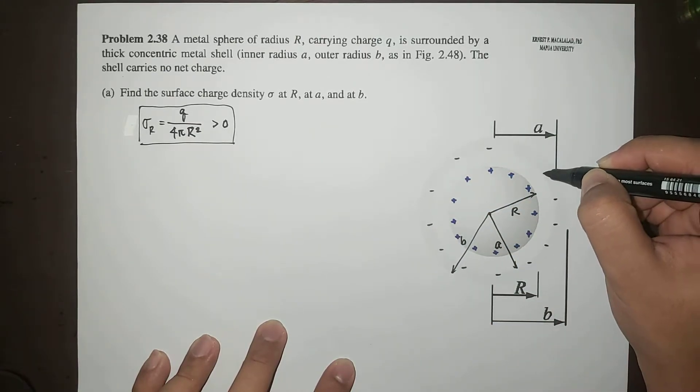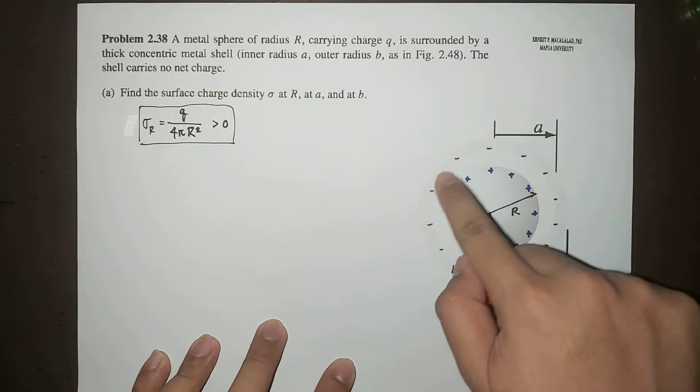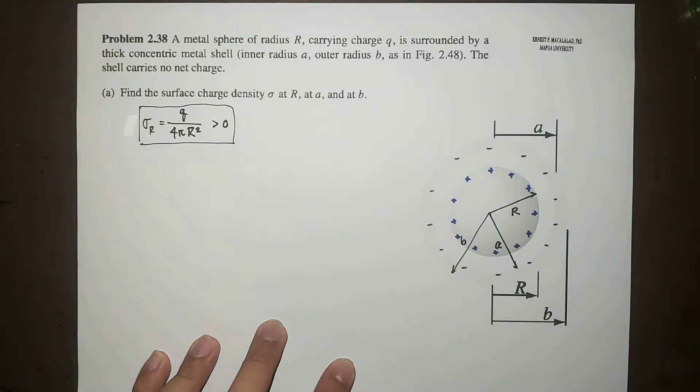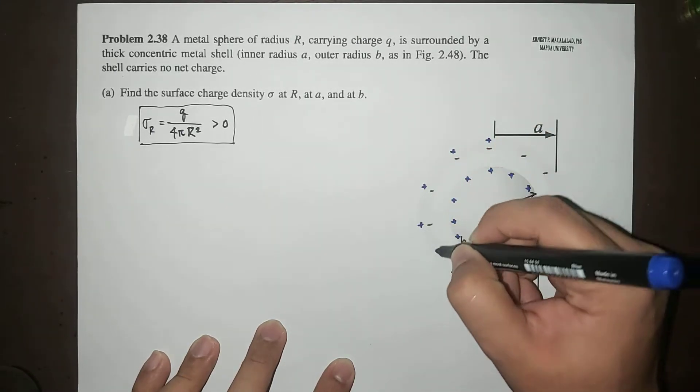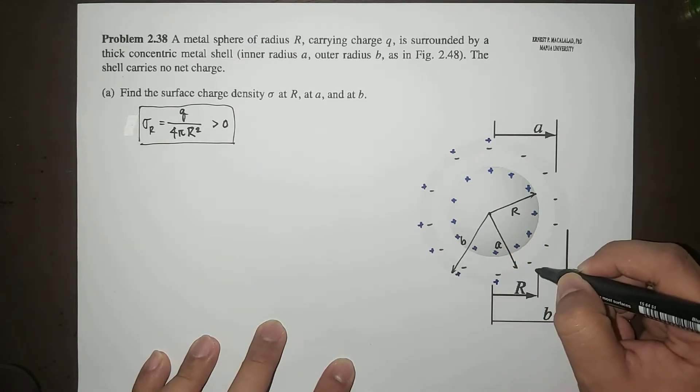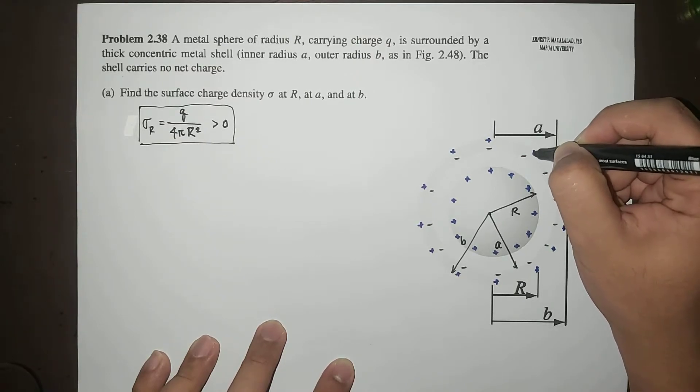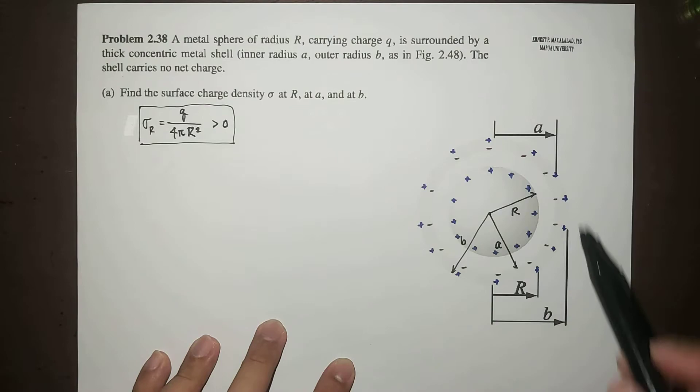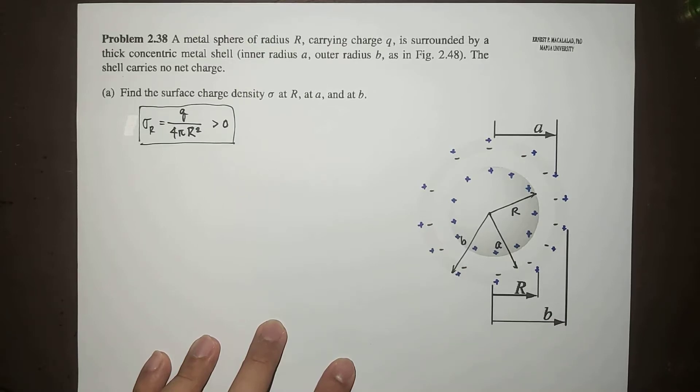As a result, this will cause an accumulation of negative charges at the inner part. But because the shell carries no net charge, an equal amount of charge will go on the outer surface of the shell at radius B. These are the induced charges on the metal shell because of the net charge of the metal sphere at the center.